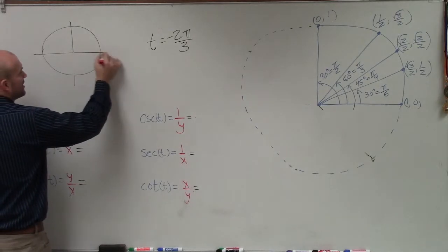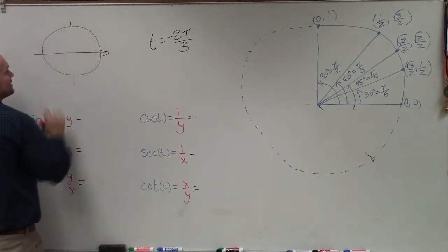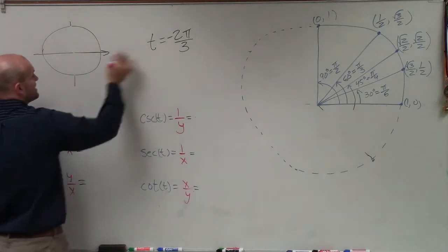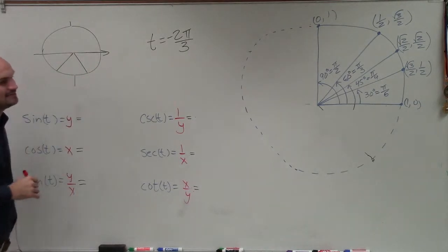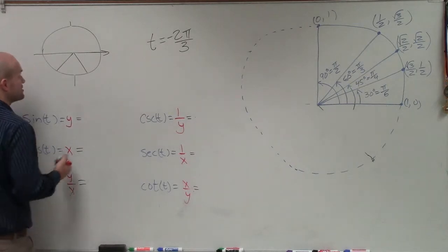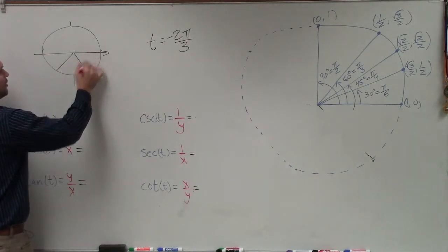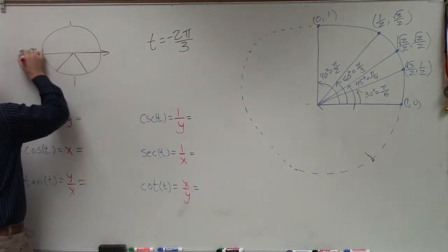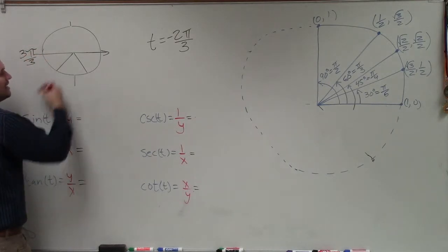Well, remember, we started at our initial side. And what I'm going to do is just break this up. And since I'm dealing with a denominator of 3, I'm going to break up my bottom half of my circle into thirds. Because if I start here and I go all the way around, we know that's π, which would be 3π over 3.